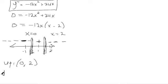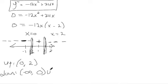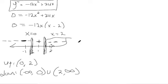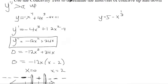Where is it concave down? It's concave down from negative infinity to 0, and then again from 2 to positive infinity, because that's where the second derivative is negative.